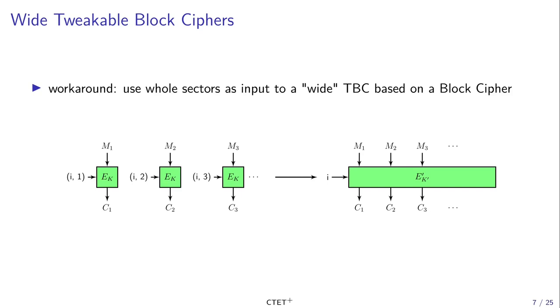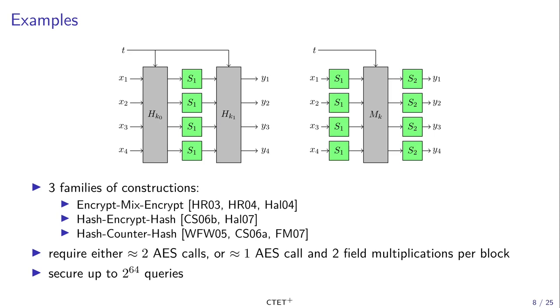Using such an enciphering algorithm, if you have, for example, a single bit change in M1, then all the ciphertext blocks C1, C2, C3 and so on will be affected, unlike before where only C1 would have been changed. Several such constructions already exist and they can be divided into three families: encrypt-mix-encrypt, hash-encrypt-hash, and hash-counter-hash.